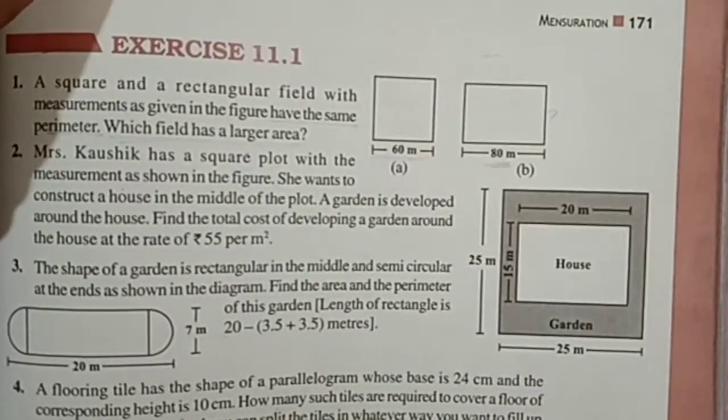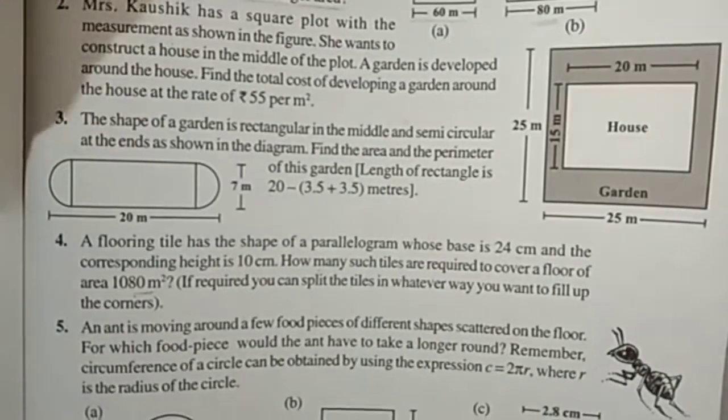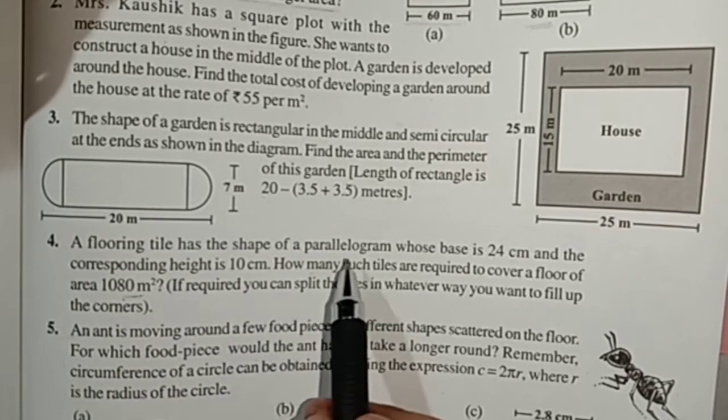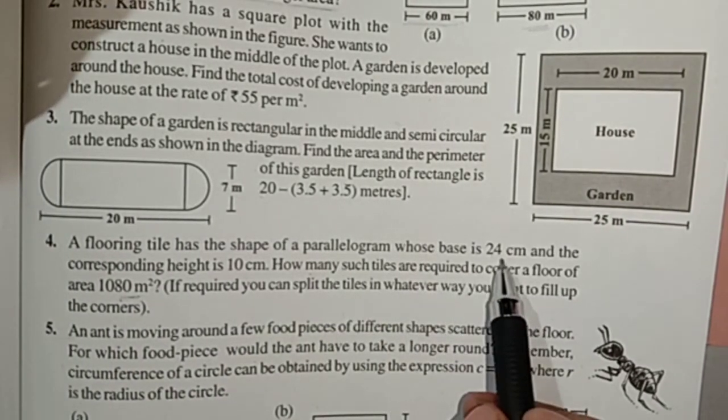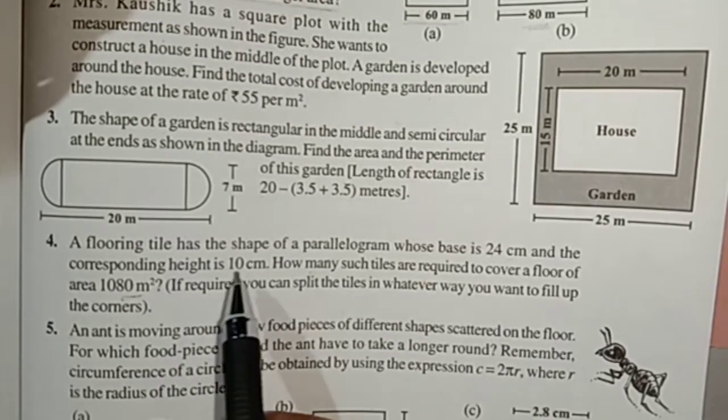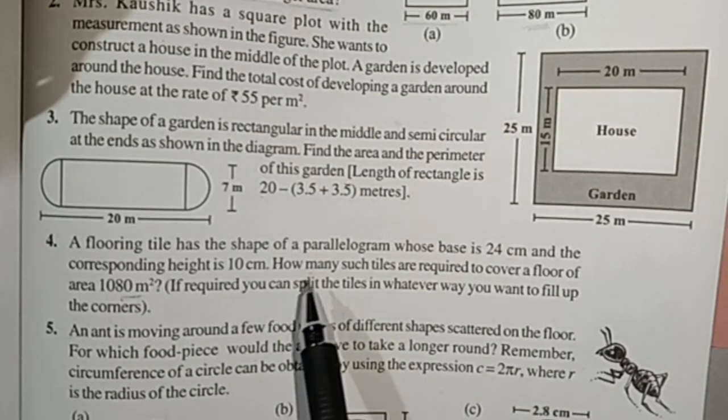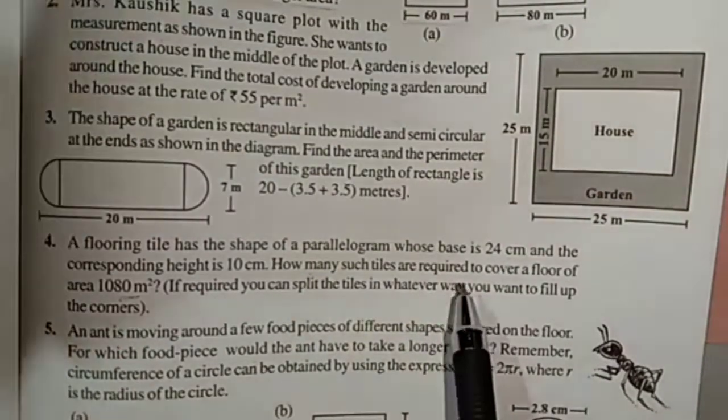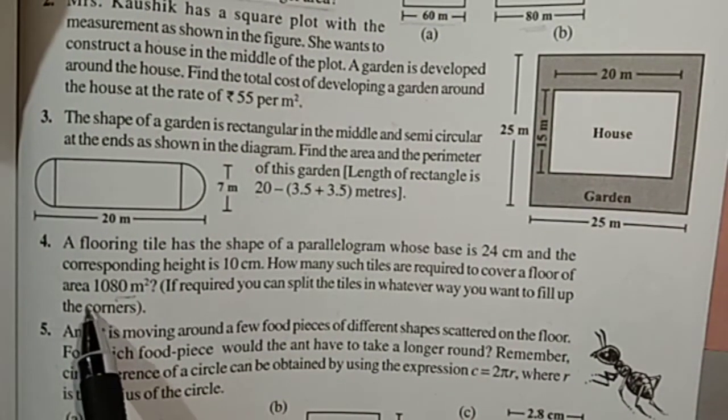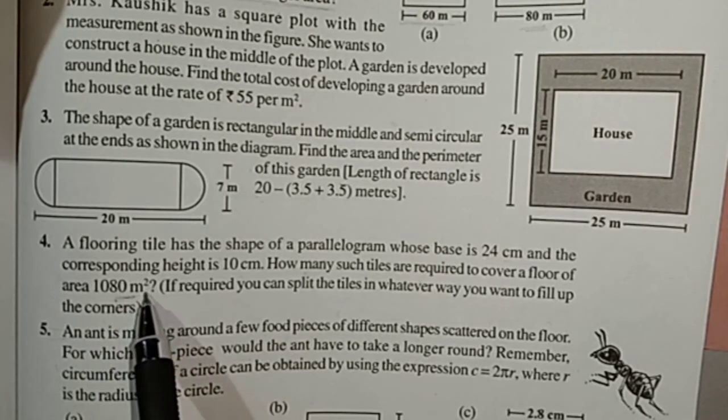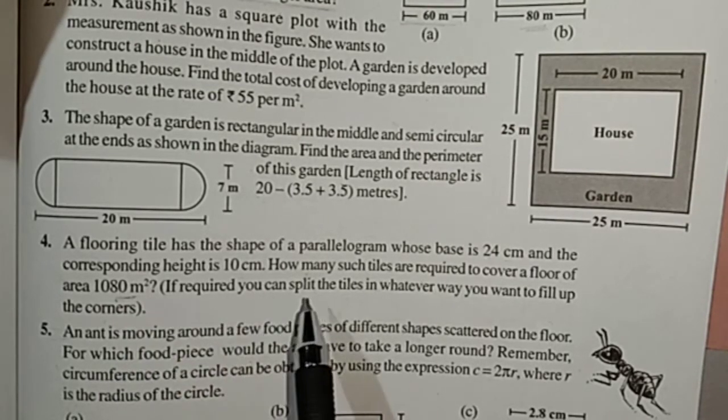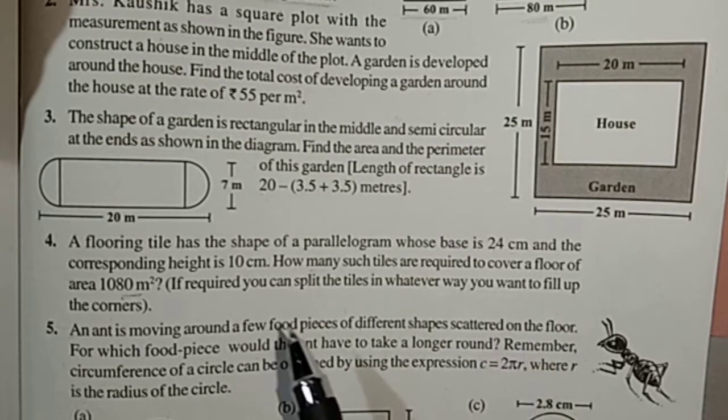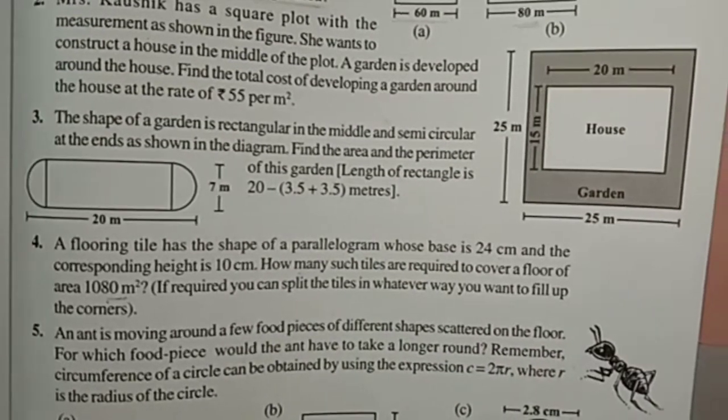To continue with exercise 11.1 question number 4. A flooring tile has the shape of a parallelogram whose base is 24 centimeter and the corresponding height is 10 centimeter. How many such tiles are required to cover a floor of area 1080 meter square? If required you can split the tiles in whatever way you want to fill up the corners.